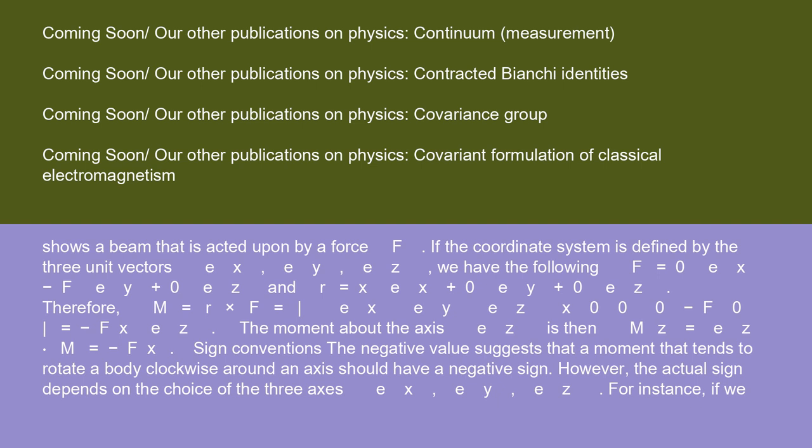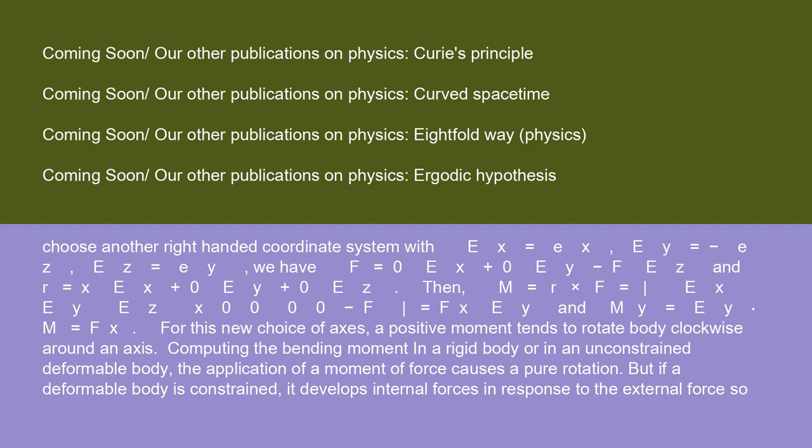Sign conventions: the negative value suggests that a moment that tends to rotate a body clockwise around an axis should have a negative sign. However, the actual sign depends on the choice of the three axes e_x, e_y, e_z. For instance, if we choose another right-handed coordinate system with e'_x = e_x, e'_y = -e_z, e'_z = e_y.